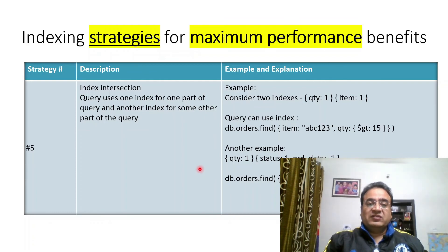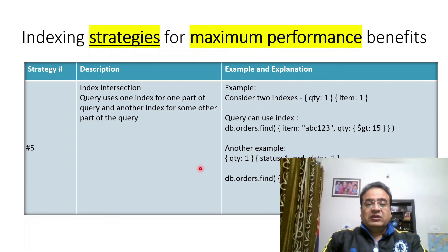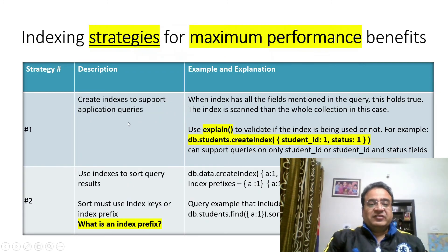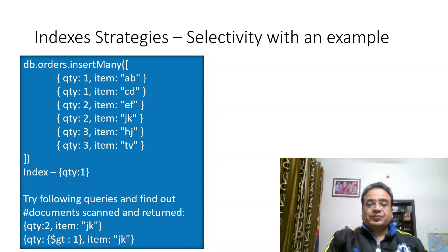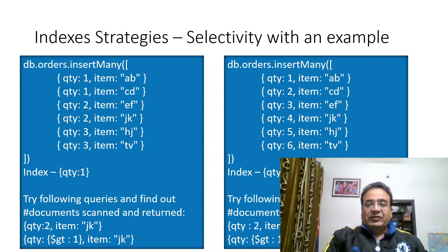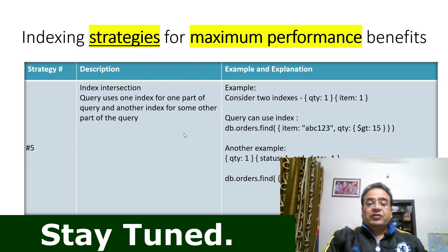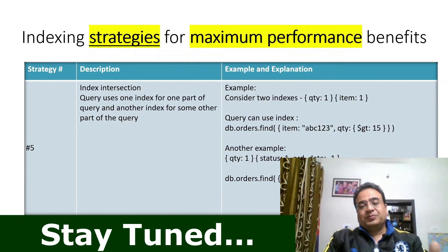Let me show you all five strategies once again. First, create indexes to support application queries and always use explain. Second, use indexes to sort query results. Third, ensure indexes fit in RAM. Fourth, create queries that ensure high selectivity. Fifth, leverage index intersection. By making use of all these strategies you can get maximum performance benefits from indexes. I also have a hands-on section to show you all of this in action.